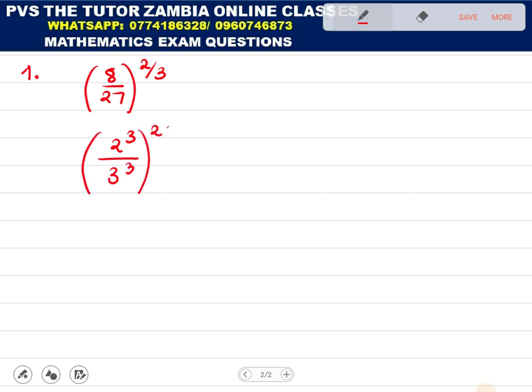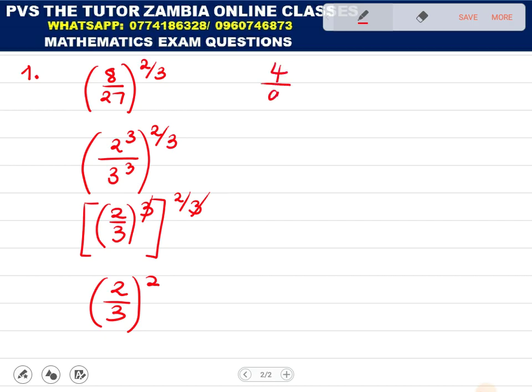Now this 3, the power here is common so we can take it out such that you are going to remain with 2 over 3. We take out the 3 there but remember that you've got the power also outside here 2 over 3. This 3 and that 3 now they can cancel. So now you remain with 2 over 3 squared which will give you the final answer to be 4 over 9. That is the final answer.